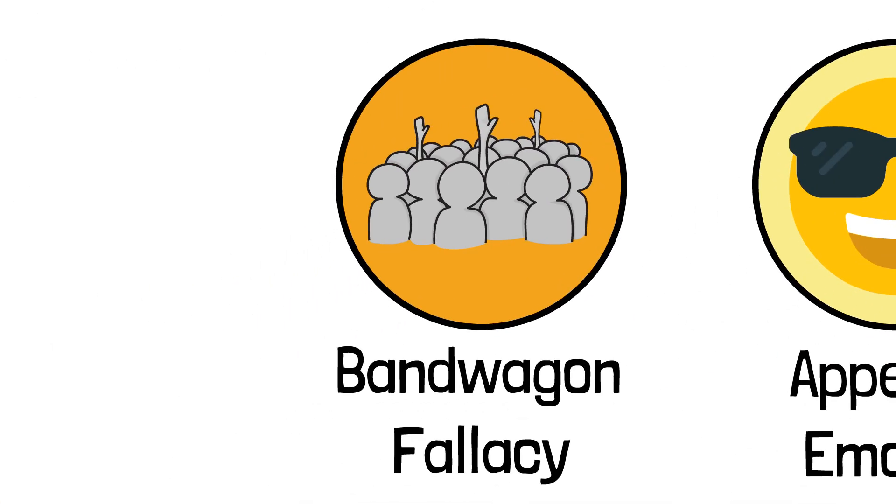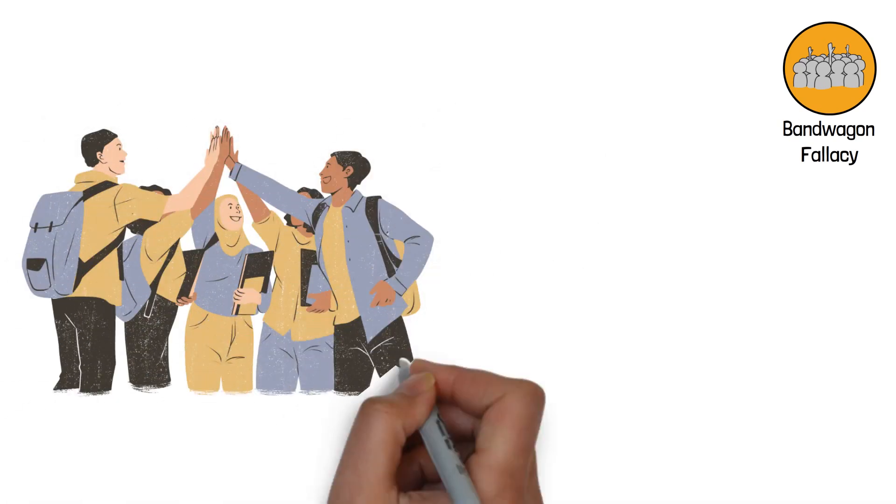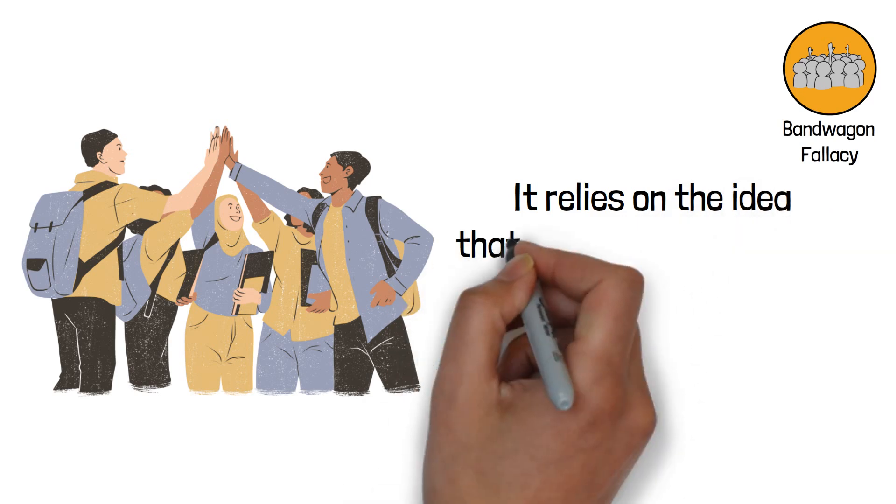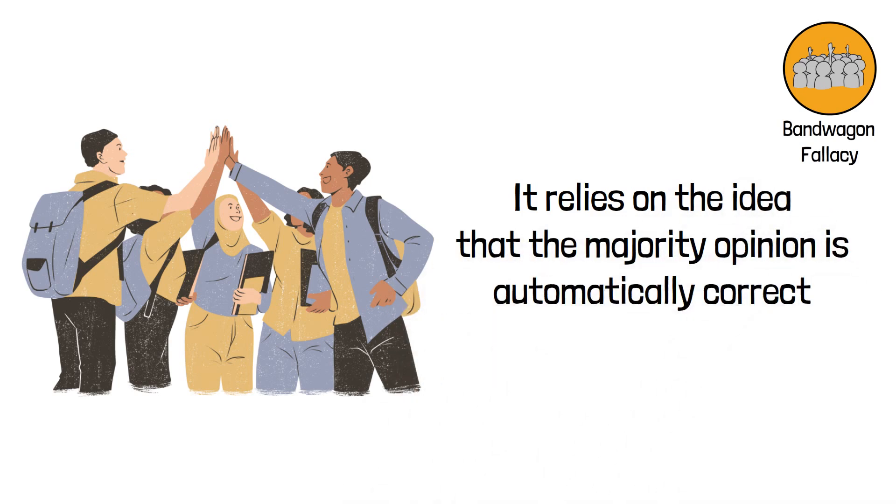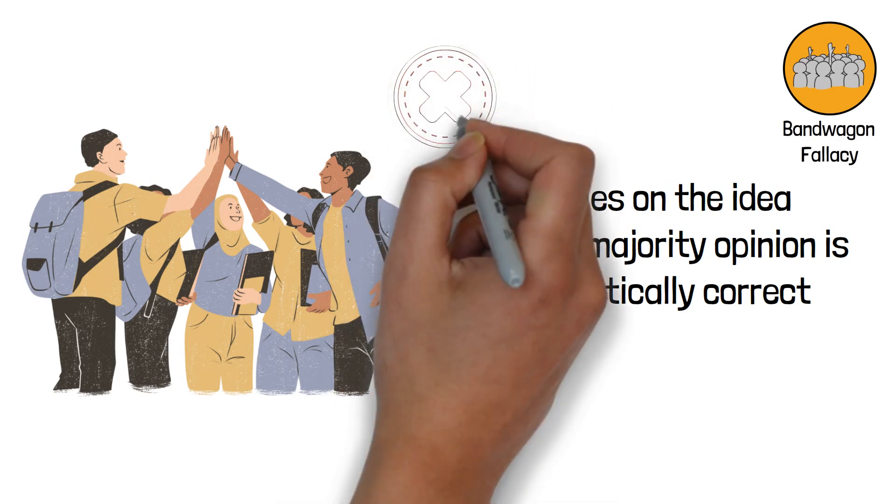11. Bandwagon Fallacy. Also known as the Appeal to Popularity, this fallacy argues that something must be true or right because many other people believe it. It relies on the idea that the majority opinion is automatically correct, without considering the validity of the argument or evidence supporting it. The popularity of a belief does not guarantee its truthfulness.